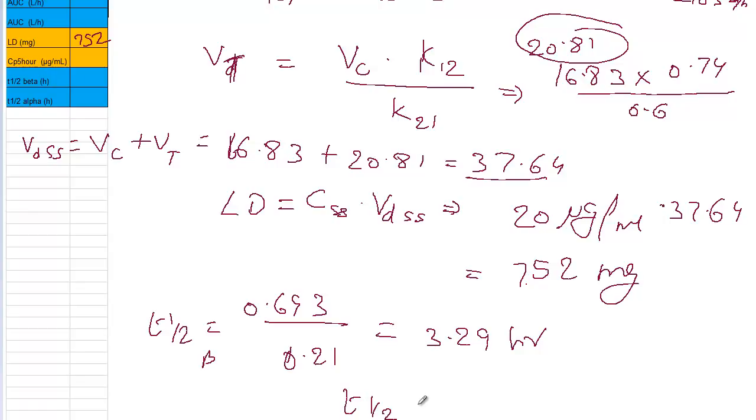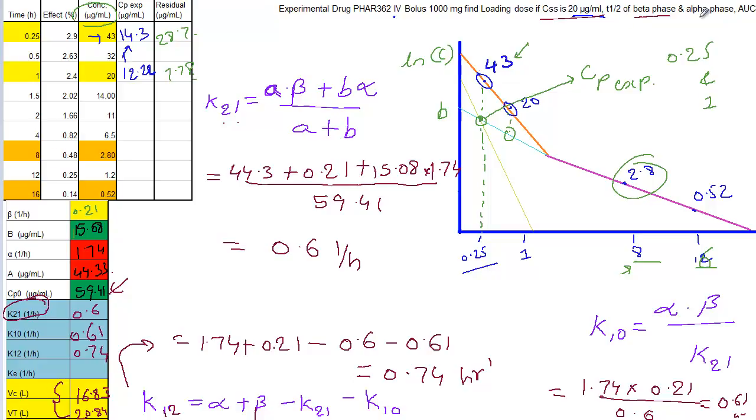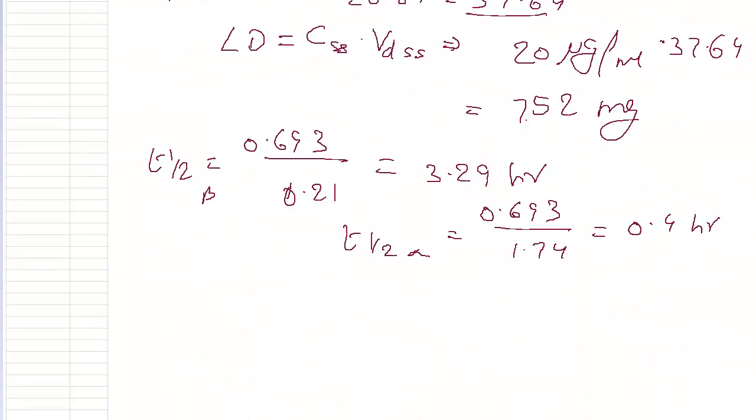Same thing for the T half of alpha. It's 0.693 divided by alpha phase. It's 1.74. If you solve for this one, you'll get a value of 0.4 hours. What else we are left with? Calculate beta phase, T half of beta phase and T half alpha phase. We calculated loading dose for VdSS is 20 microgram and we're to calculate area under the curve, AUC.